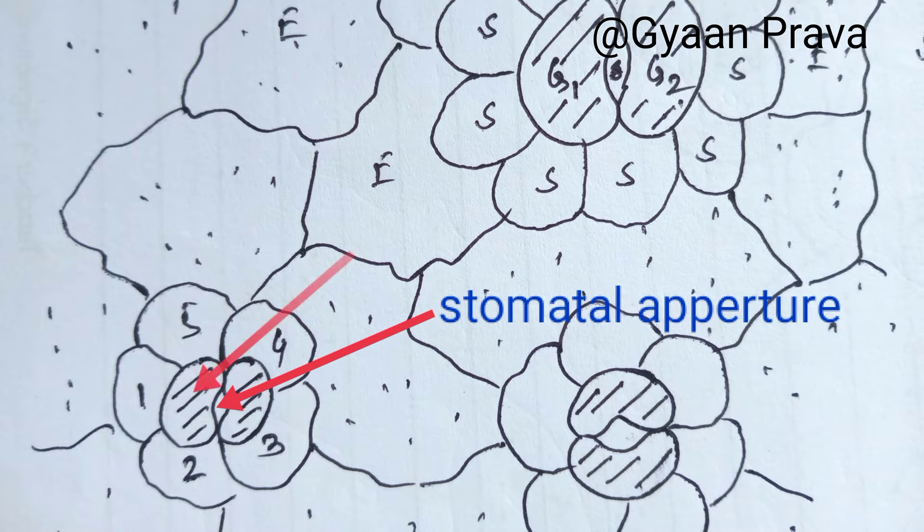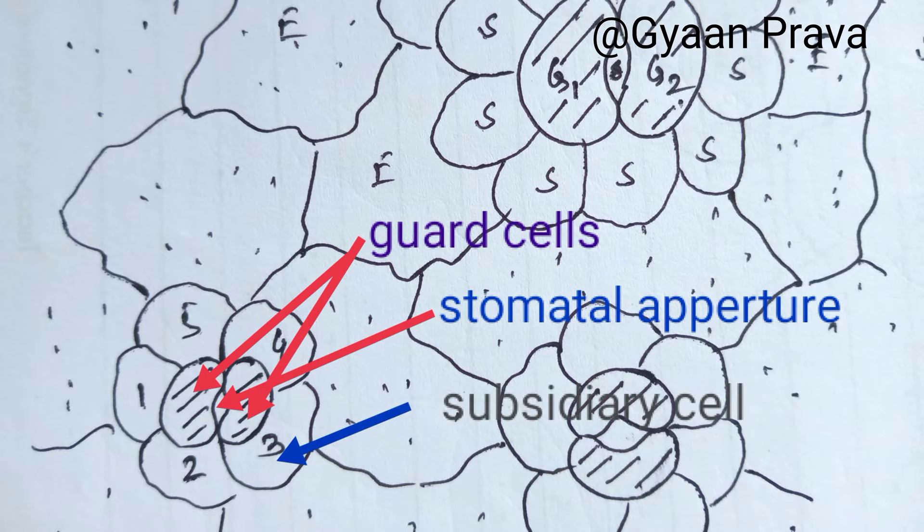Hence, the structure appears as a star. It is termed actinocytic type of stomata and is observed in the family Ebenaceae.